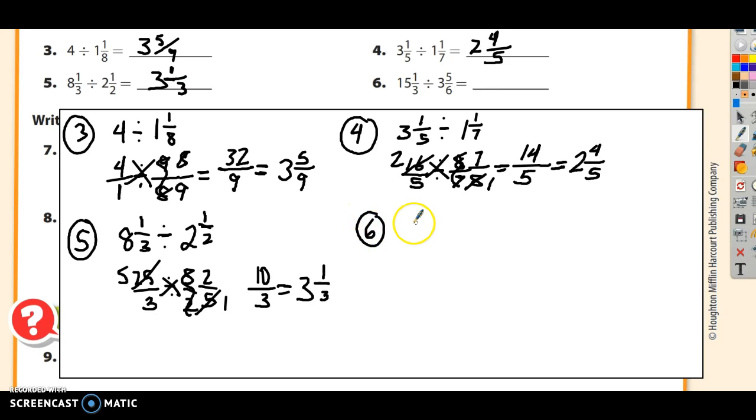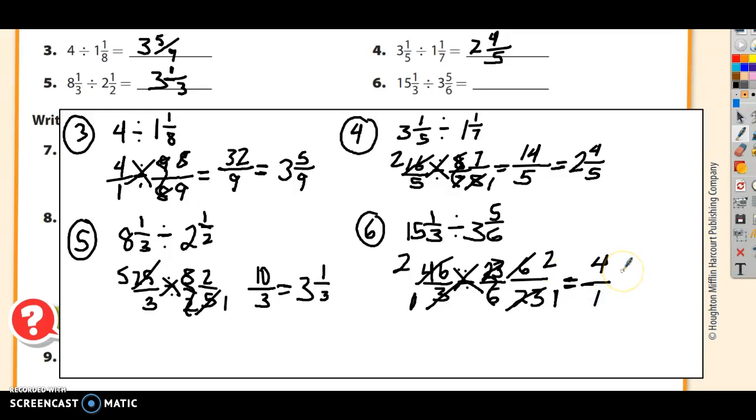And number 6. 15 and 1 third, divided by 3 and 5 sixths. 15 and a third is the same as 15 times 3 is 45, 46 thirds. 3 times 6 is 18, plus 5 is 23. 23 sixths. Are you getting fast at this? Can you see what's going to simplify? I can. Watch. Multiply the reciprocal. 46 and 23 share a factor of 23. 23 goes into 23 once. 23 goes into 46 twice. 3 and 6 share a factor of 3. 3 goes into itself once. And 3 goes into 6 twice. And all that complicated math just turned into 2 times 2 is 4, over 1 times 1 is 1. 4 over 1 is 4.